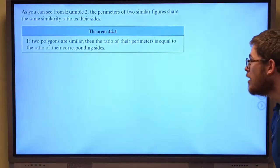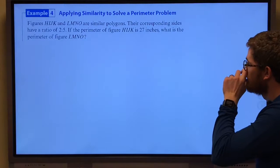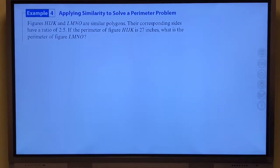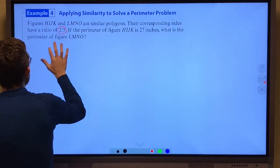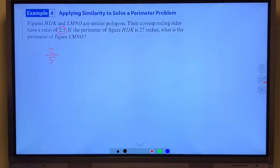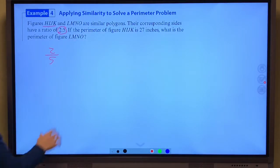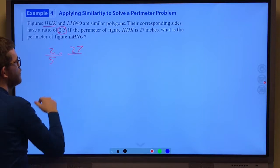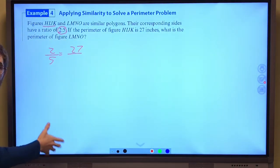If two polygons are similar then the ratio of their perimeters will be equal to the ratio of their corresponding sides. Here these two figures are similar polygons. Their corresponding sides have a ratio of 2 to 5. So the corresponding sides have a ratio of 2 to 5, smaller to larger obviously. If the perimeter of figure HIJK is 27, HIJK would be referring to the 2 because that is first in that order. What is the perimeter of figure LMNO? Well, 2 to 5 then is going to be the same as the ratio of their perimeters. The ratio of their sides equal to the ratio of the perimeters. That's that theorem we just saw, and we just saw that work out on the last problem.